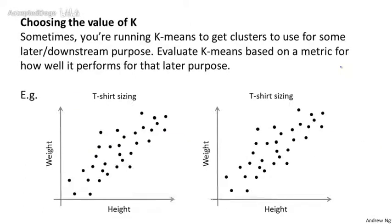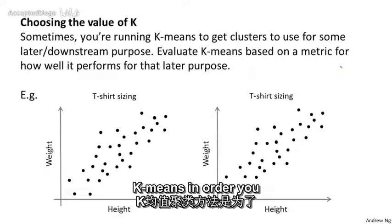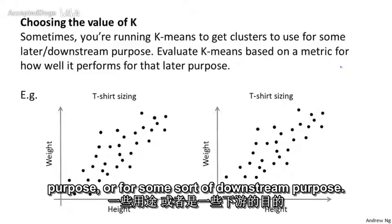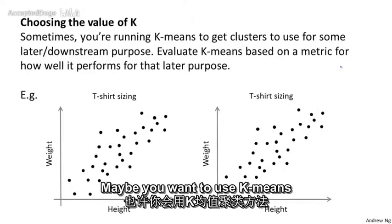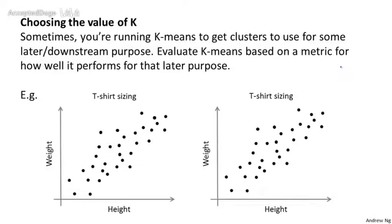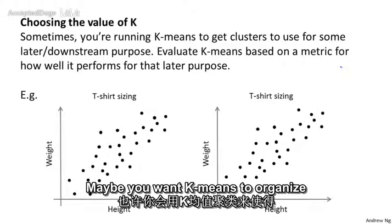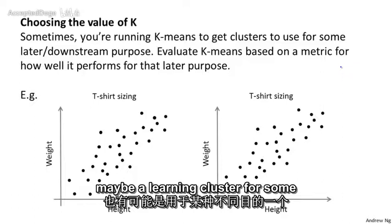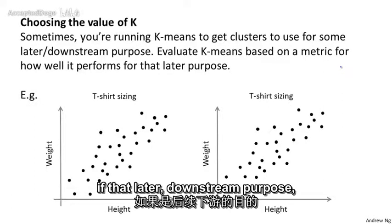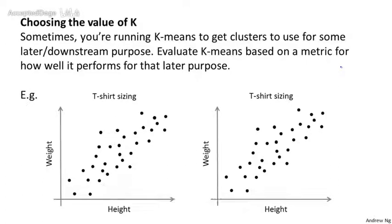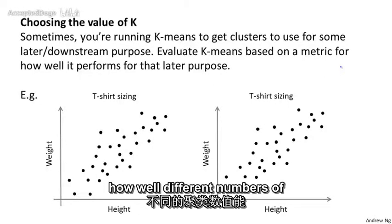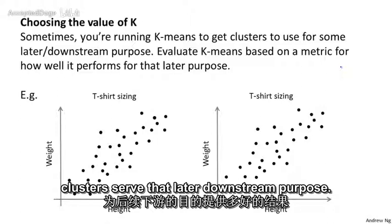Here's another way to think about choosing the value of k. Very often, people are running k-means in order to get clusters for some later downstream purpose — maybe market segmentation, organizing a computer cluster, or some other application. If that later downstream purpose gives you an evaluation metric, then often a better way to determine the number of clusters is to see how well different numbers of clusters serve that later downstream purpose.